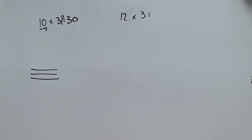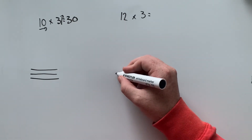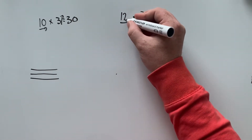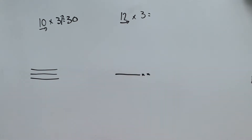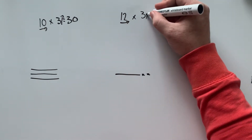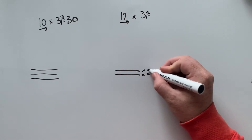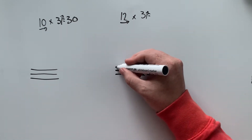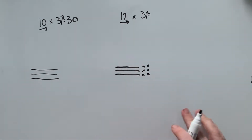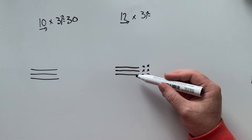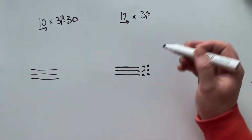Similarly, we can represent that over here, where we have 12. So represent 12 as a number going across like this: 10, 11, 12 — and we need to build that up three times. 10, 11, 12 — that's two times. The third time looks like this. And then we can do our count to see what that answer is: 10, 20, 30, 31, 32, 33, 34, 35, 36.